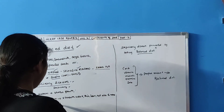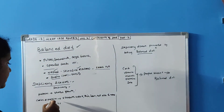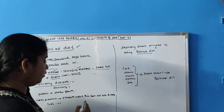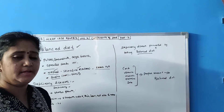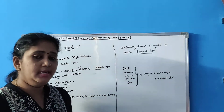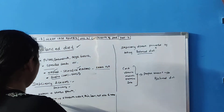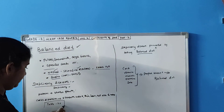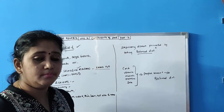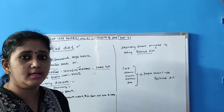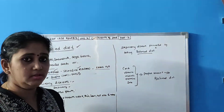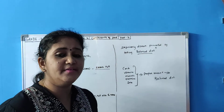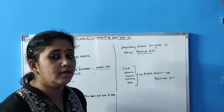If food does not contain carbohydrates and proteins, it will stop the growth of the body, and your body will become very weak, thin, and lean, making it hard to move. More details about what happens when specific vitamins are lacking are given in Table 2.3 in your book. Deficiency diseases can be prevented by taking a balanced diet.